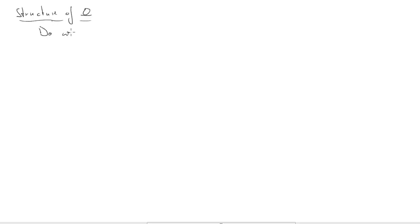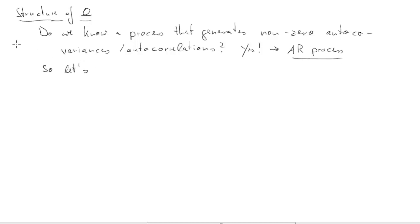What's the structure of the omega if you have autocorrelated error terms? The question we could ask ourselves, do we know a process that can generate non-zero autocorrelations? The answer is yes. We talked about autoregressive processes. So what we do here is that, for the time being, we will assume that ut follows an AR1 process. And of course, that's a special case.